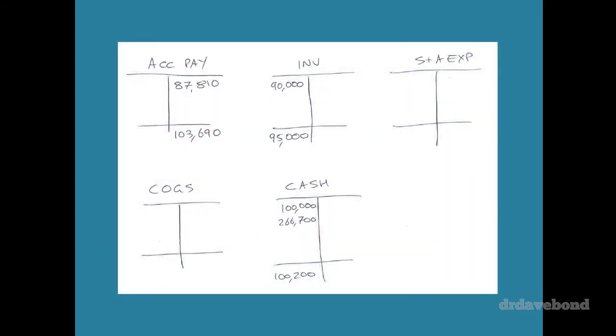So we've done that. This next one is probably the toughest section of all of it. We're moving to payments to suppliers. Now with payments to suppliers, we're going to be looking at accounts payable. So let's throw in accounts payable. And we start with 87,810 and we end with 103,690.